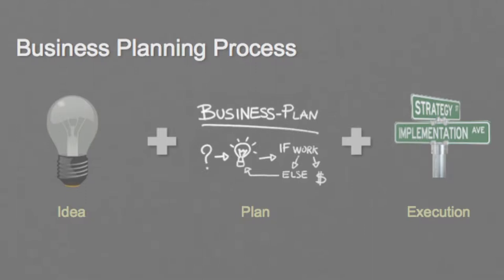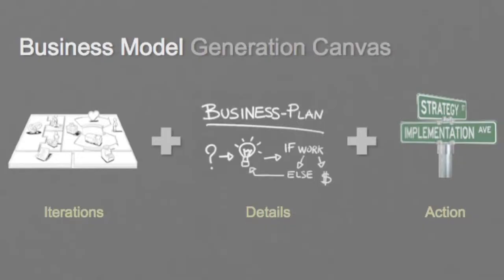A really simple way of looking at the business planning process: we have an idea, we develop a business plan around that projecting out four or five years, and then we have some way of executing it. The way the business model canvas fits into this is we want to look at a number of different iterations of what our model could be before we get into the details of the plan itself. The plan will allow you to test the theories you have within the business model and then hopefully lead to some action and how you're actually going to execute it.